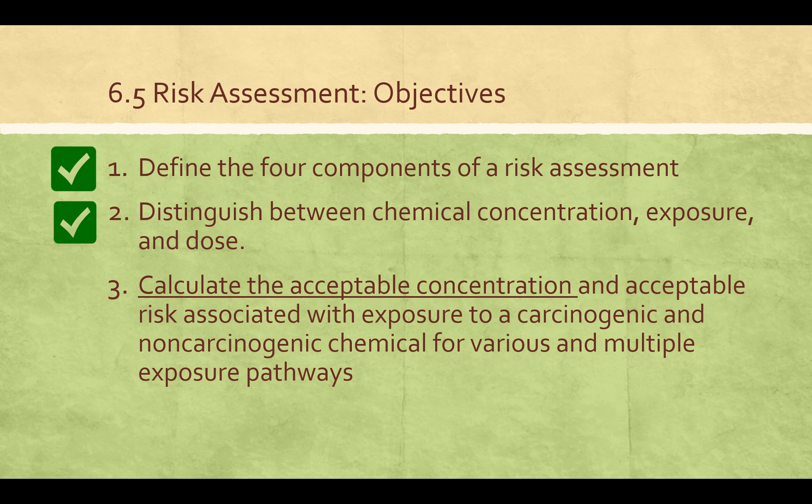Before the last part of the last lecture before spring break, we discussed acceptable risk, so hopefully you remember what an acceptable risk is. That's usually 10 to the minus 6, or between 10 to the minus 4 and 10 to the minus 6, and an unacceptable risk is 10 to the minus 3. So an acceptable risk is 1 in a million, and 1 in a thousand is not an acceptable risk.